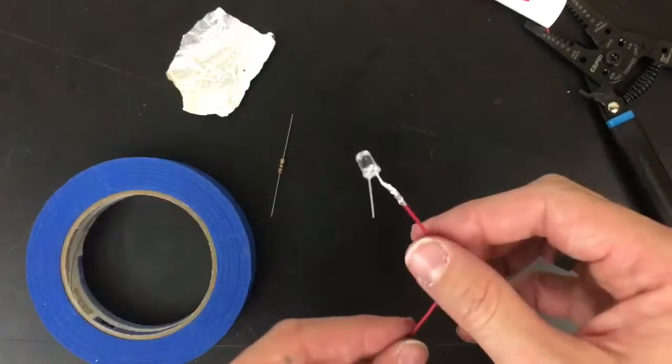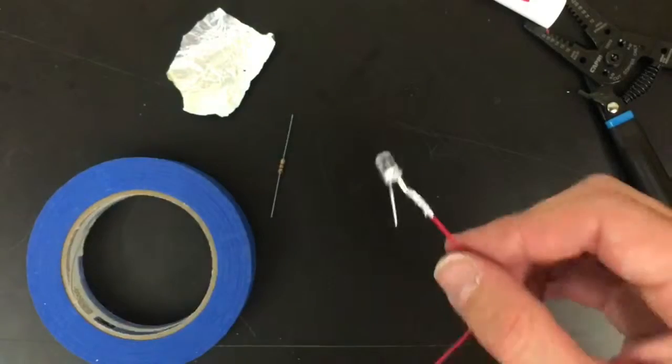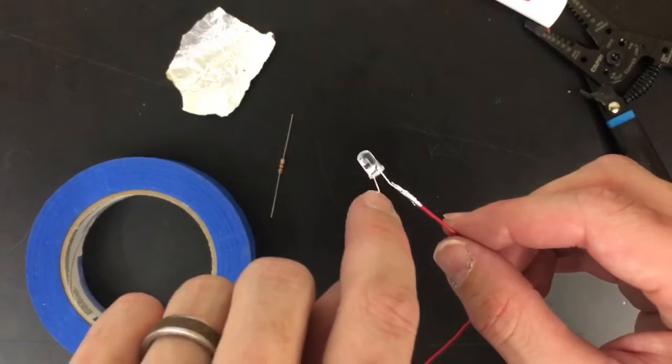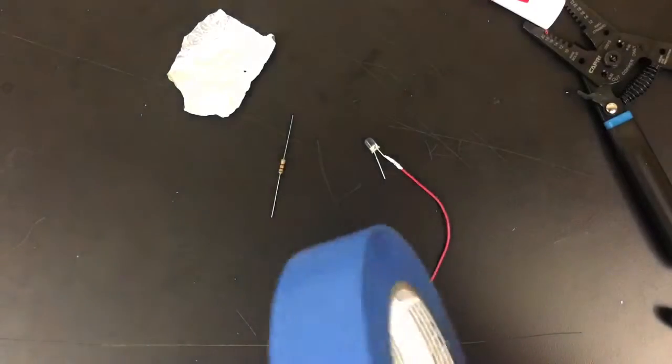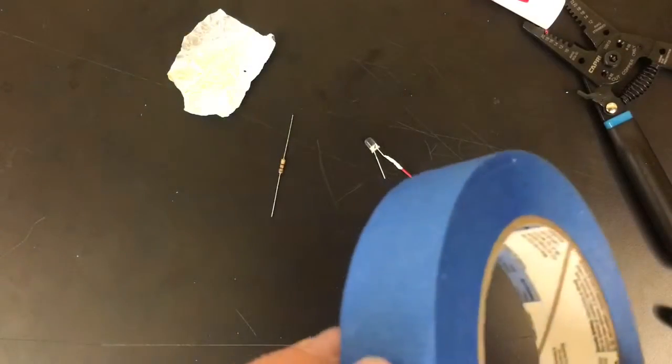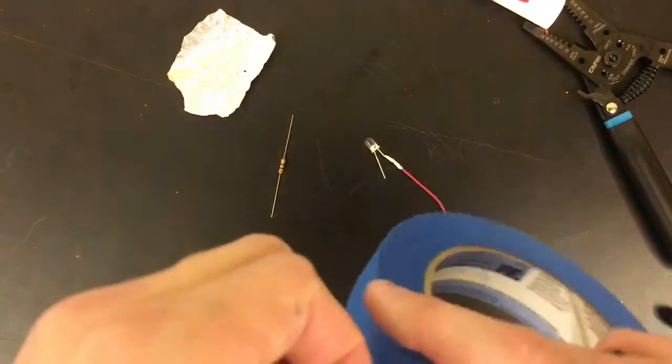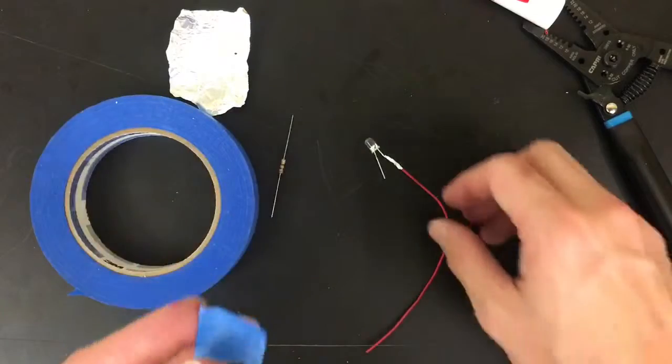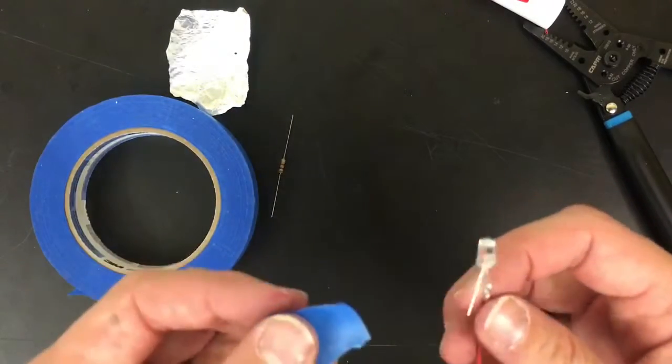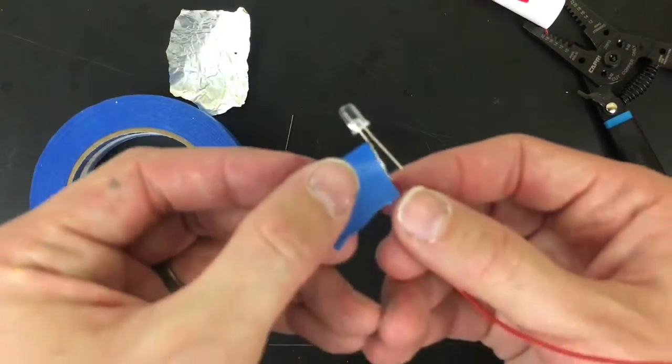The last step here, to make this really secure and strong, and also to keep it electrically insulated from this other wire, to prevent it from shorting out, is to take a really teeny piece of masking tape or blue painter's tape. Scotch tape will not work for this. And I think actually the blue tape or the masking tape is even better than electrical tape.